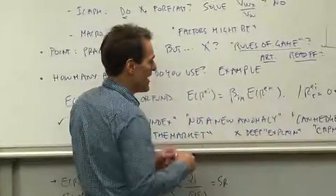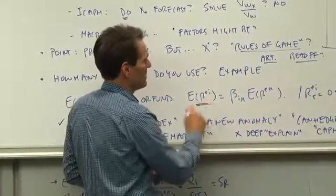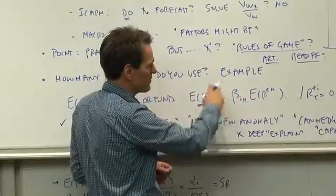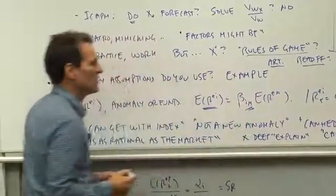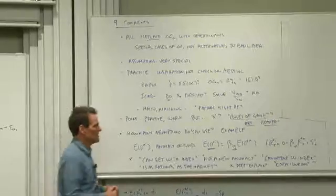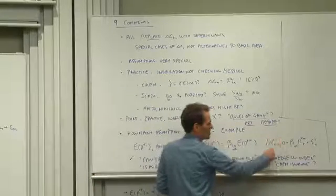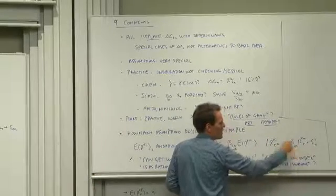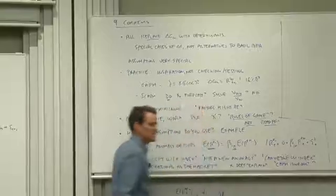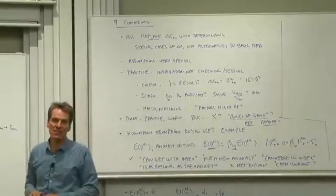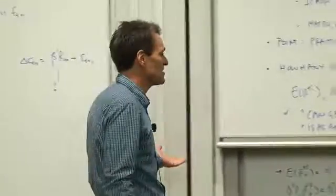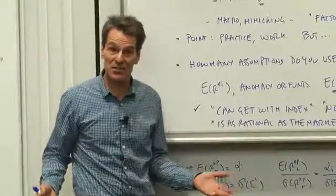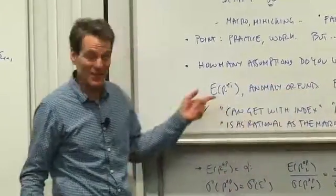And suppose you find the expected return is exactly what the CAPM says it ought to be. Or equivalently, you run a regression of that return on the market, you find there's the beta, no intercept. The CAPM explains this anomaly. That's a standard thing to do, and a very useful thing to do, especially if you want to save yourself a whole bunch of fees from a hedge fund.